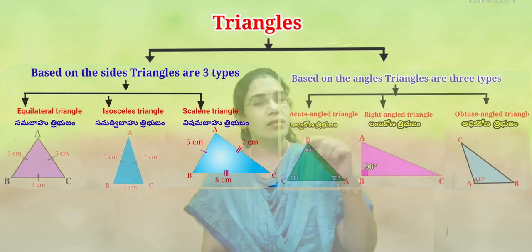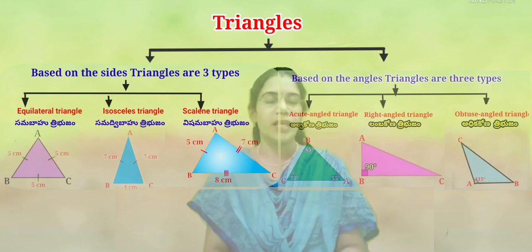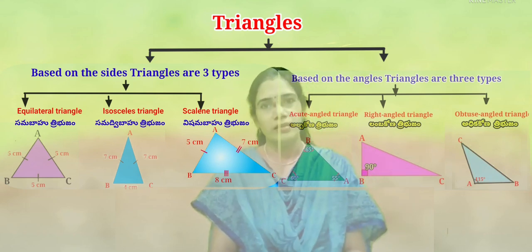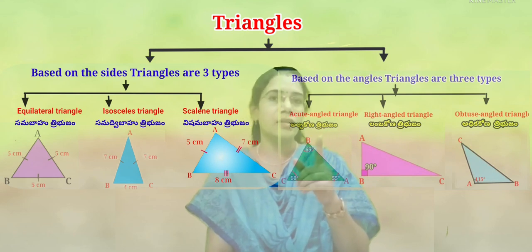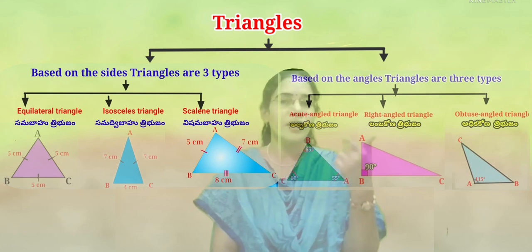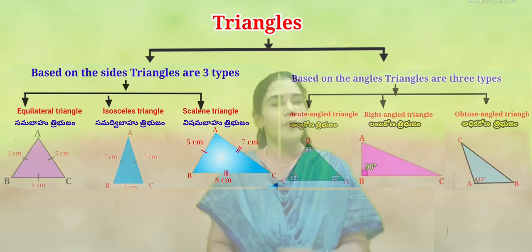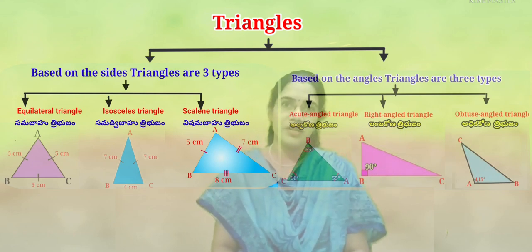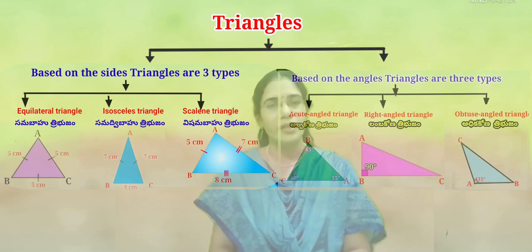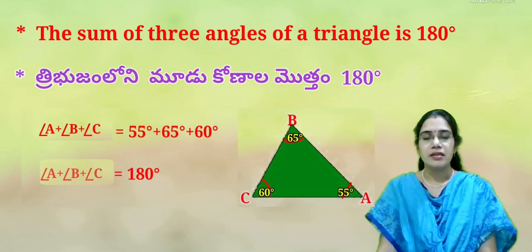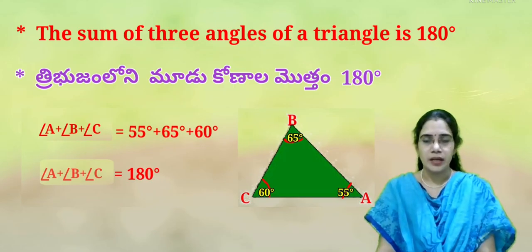In the acute angle triangle, all angles are below 90 degrees. In the right angle triangle, one angle is 90 degrees. In the obtuse angle triangle, one angle is more than 90 degrees — for example, 115 degrees. We can also observe that the sum of the three angles in a triangle is always 180 degrees (Thribhujam lo ni moodu konala muttam 180 degrees lo untundi).